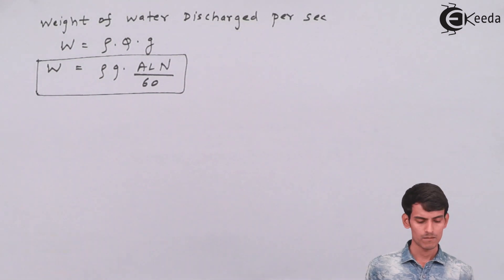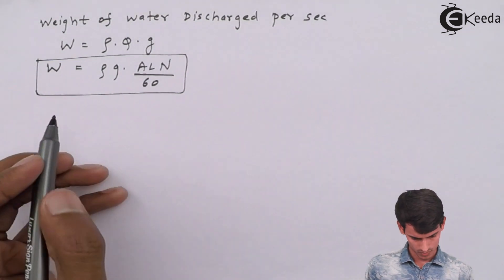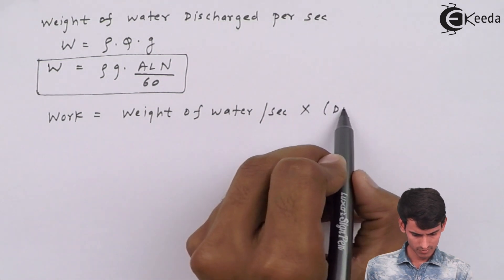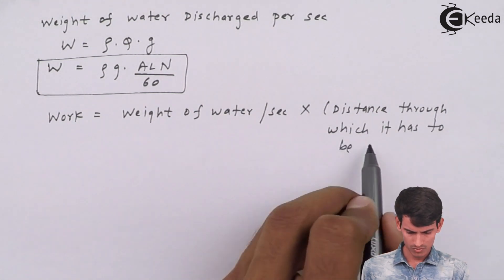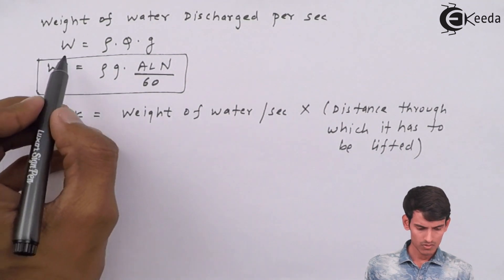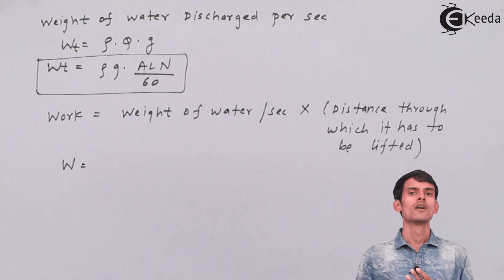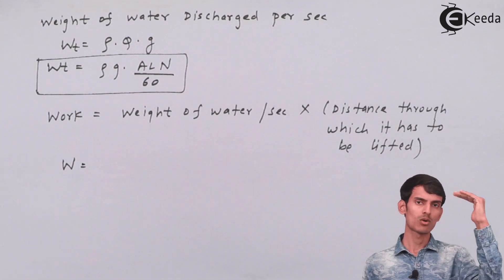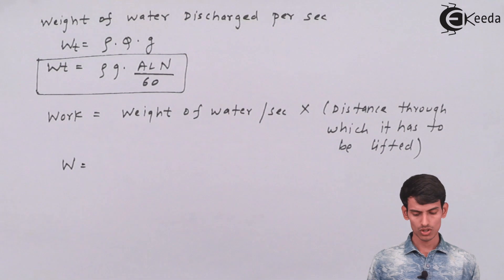Now you have to calculate the work done — it's very simple: weight of water discharged per second into the distance through which it has to be moved. The distance through which it has to be lifted is hs plus hd, where hs is the distance from the reservoir to the center of the pump, and hd is from the center of the pump to the outlet of the delivery pipe.